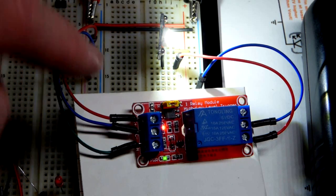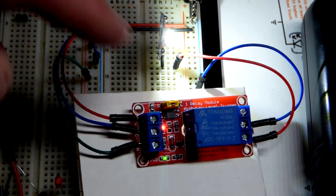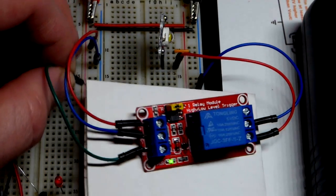And so right now we've got a high input, the positive supply. It's a 5 volt relay. It takes care of the rest.